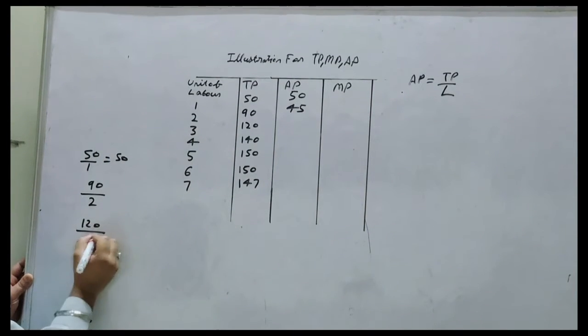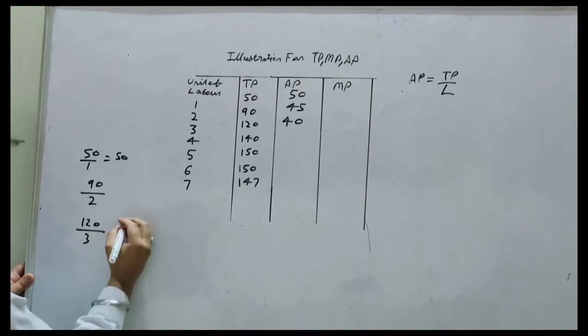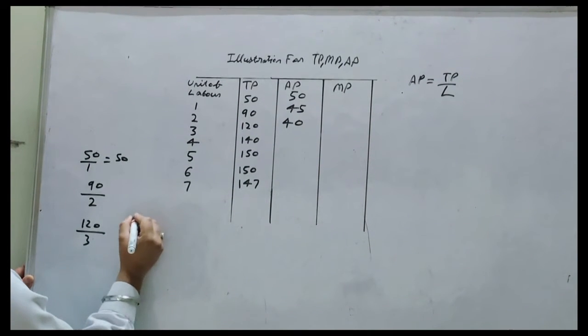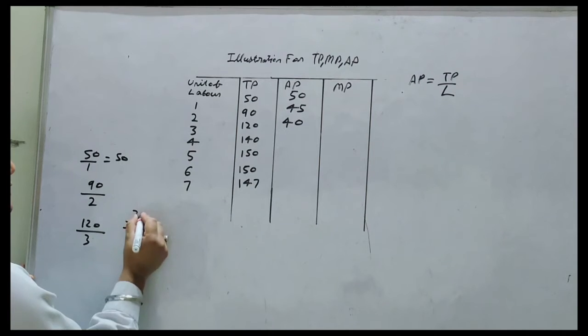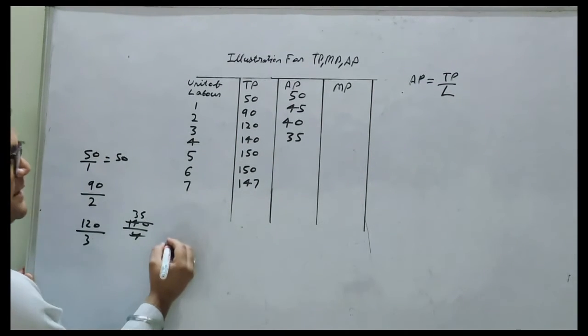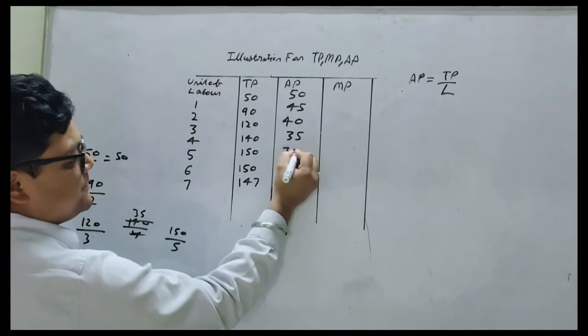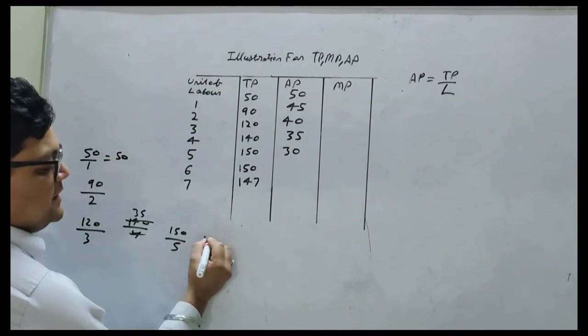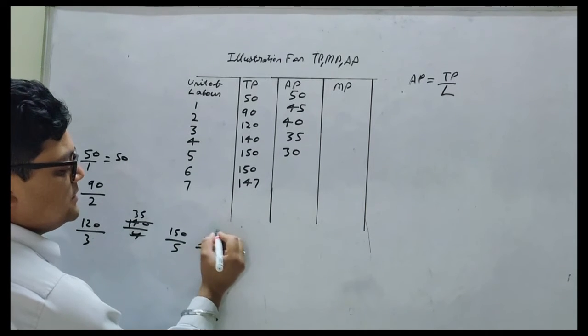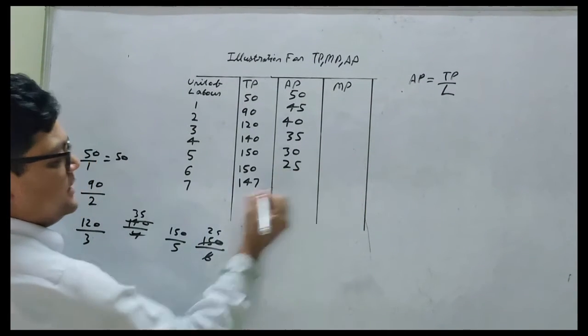Next will be 140 divided by 4, which equals 35. Next will be 150 divided by 5, which equals 30. Again next will be 150 divided by 6, which equals 25. And at last, 147 divided by 7, which equals 21.